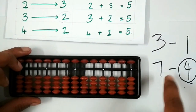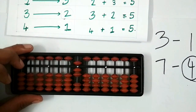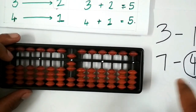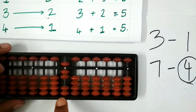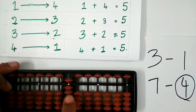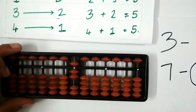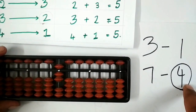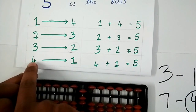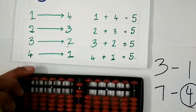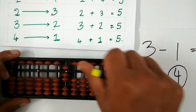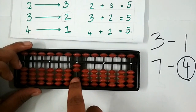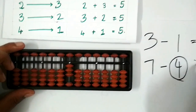Let us do 7 minus 4 again. Place 7 on the abacus and check whether there are enough beads to subtract 4 at the lower end. We see that we have only 2 beads, so we use the friends concept. The friend of 4 is 1. Step 2: remove 5 and add 4's friend, which is 1. We get the answer as 3.